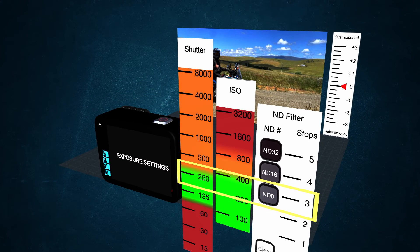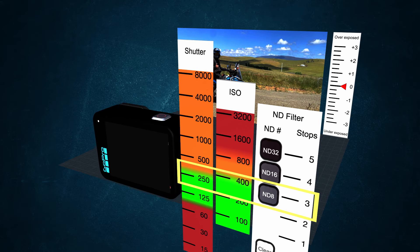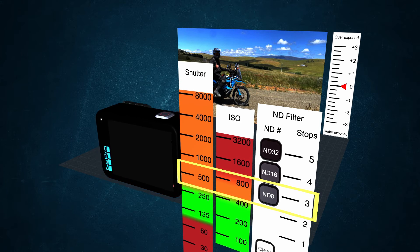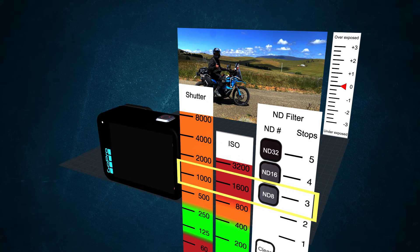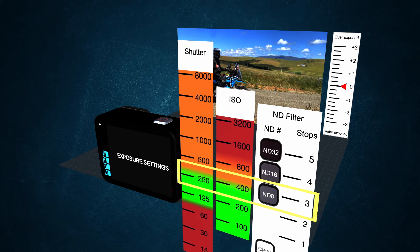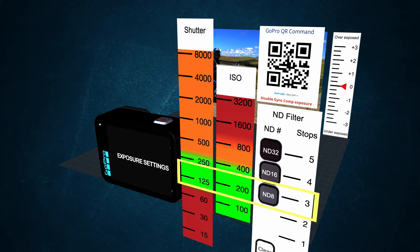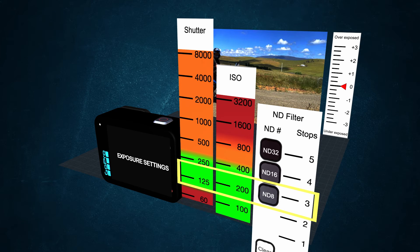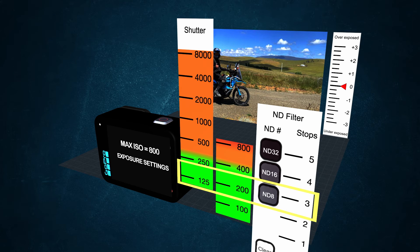The GoPro natively has gyro-compensated exposure turned on. When the camera is moving — as in when you're riding — GoPro prioritizes a faster shutter speed by increasing the ISO. For what we're trying to do, this is taking both ISO and shutter speed away from the ideal ranges. So: first, scan the QR code in the comments below to disable gyro-compensated exposure. Second, scan the QR code for setting minimum shutter speed, which will prevent the GoPro from going below 1/125th of a second. Finally, in the Protune settings, set a max ISO of 800 to prevent GoPro from creating noisy images.